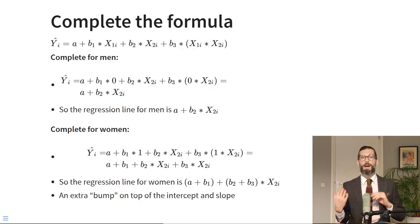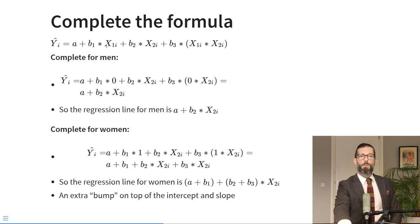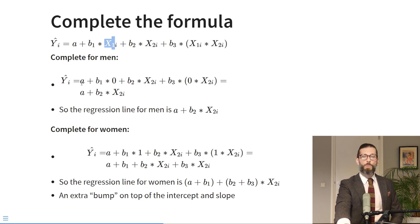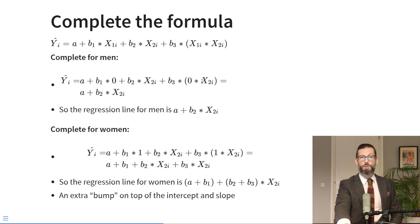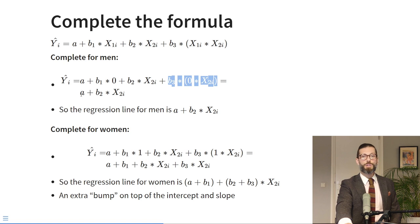We can see this if we fill out the formula. Men score zero on the dummy variable sex. So we replace every x sub one with zero: we get A plus B1 times zero — cancelled out — plus B2 times x2 plus B3 times zero times x2 — also cancelled out. So for men, the formula for the regression line simplifies to just A plus B2 times x2.